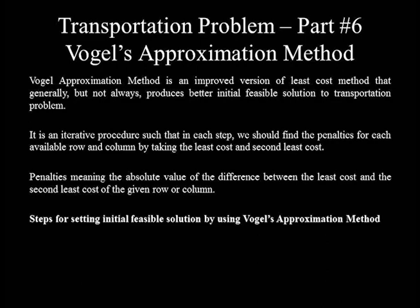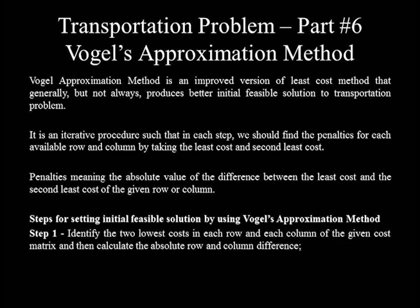The following are the steps for setting an initial feasible solution using Vogel's approximation method. Step 1: Identify the two least costs in each row and column of the given cost matrix, and then calculate the absolute row and column difference — meaning consider only the positive (absolute) value of the difference between the least cost and the second least cost in a given row or column.